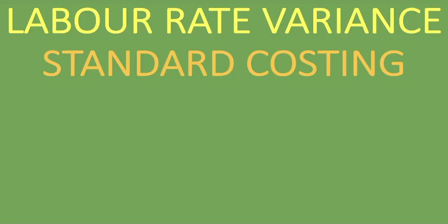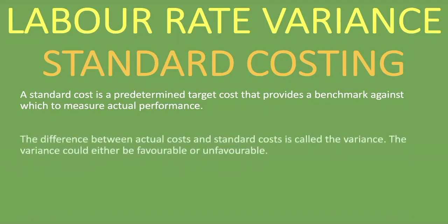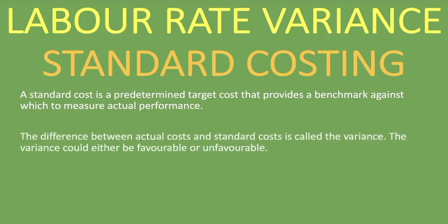Welcome to this lesson where we're looking at the labor rate variance, continuing our series on standard costing. A standard cost is a predetermined target cost that provides a benchmark against which to measure actual performance. The difference between actual costs and standard costs is called the variance, which could either be favorable or unfavorable.